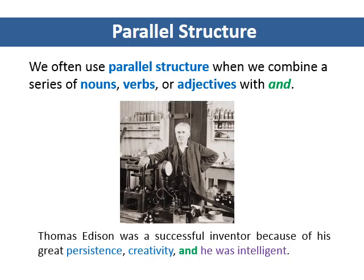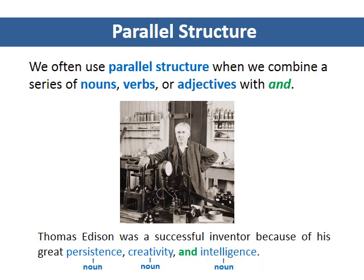Look at the sentence below. This sentence has a series of ideas combined with and. However, it is not parallel. The series has two nouns, but the third item in the series is a clause. How can we change this clause into a noun to make the series parallel? If we use the noun 'intelligence' in place of the clause, this sentence has parallel structure — it now has a series of three nouns combined with and. This makes the meaning of the sentence clear.